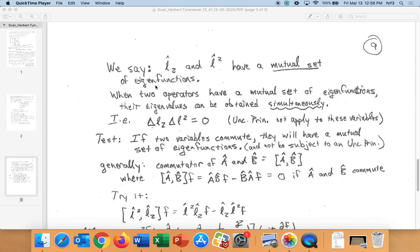So now we can say that L̂z and L̂² have a mutual set of eigenfunctions. They are the eigenfunctions for the rigid rotor. Here's something new for us. When two operators have a mutual set of eigenfunctions, their eigenvalues can be obtained simultaneously. This is different from what we saw with, say, position and momentum, where if we measured the position, we couldn't figure out the momentum, and if we measured the momentum, we couldn't figure out the position. That was Heisenberg's uncertainty principle. We can find the angular momentum around the z-axis and the square of the total angular momentum simultaneously. So the uncertainty is equal to zero. The uncertainty principle does not apply to these two variables.